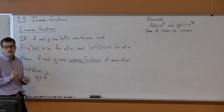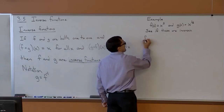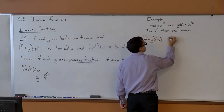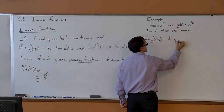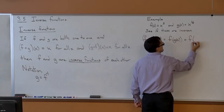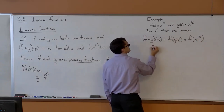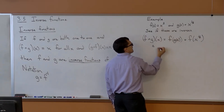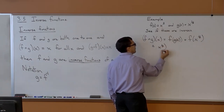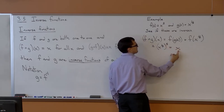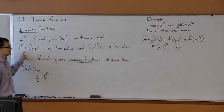Now let's look at the function composition. If I did F of G of X, that means take F and input X to the one-fifth power. X to the one-fifth power raised to the fifth power becomes X to the first.